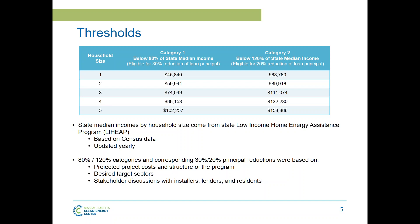We based our threshold values on the state median income used by the state LIHEAP program, which is backed by census data and updated yearly — to be consistent with other programs in the state. We set 80% and 120% categories with corresponding 30% and 20% support levels, based on program goals, the technology involved, stakeholder discussions during design, and trying to align incentive values with the right market.